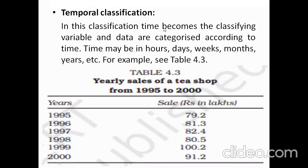In temporal classification, time becomes the classifying variable and data are categorized according to time — which may be hours, days, weeks, months, or years. For example, the yearly sales of a tea brand from 1995 to 2000 show: in 1995, sales were 79.2 lakhs; in 1996, 81.3 lakhs; in 1997, 82.4 lakhs — and so on. This kind of tabular formation is called temporal, indicating time as the classifying variable.